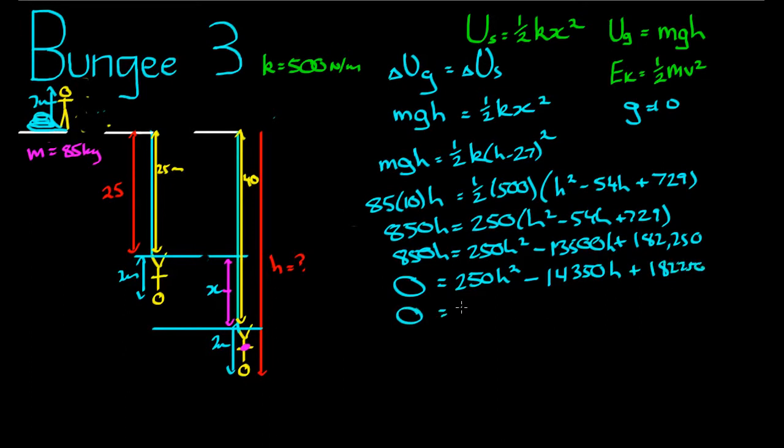We can divide everything here by 250, so that's h squared, take away 287 on 5, we'll put that into a decimal. Take away 57.4h, plus that last amount, 182,250 divided by 250, plus 729.